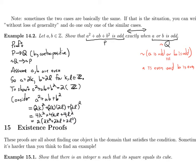And that equals 2(2k² + 2kl + 2l²). Since 2k² + 2kl + 2l² is indeed an integer, we have that a² + ab + b² is even. So we're finished with the first direction — we proved p implies q by proving the contrapositive.